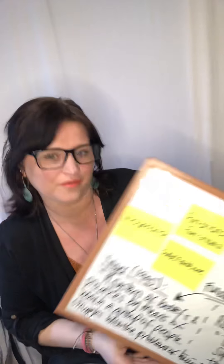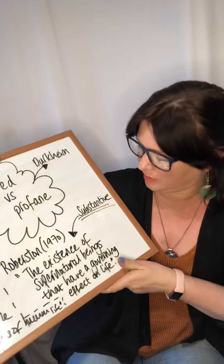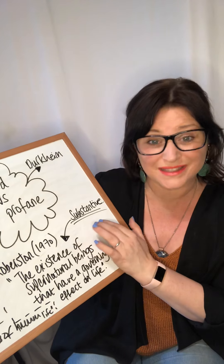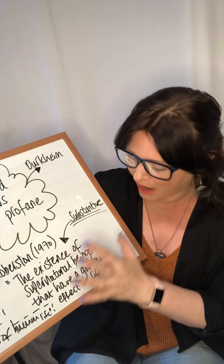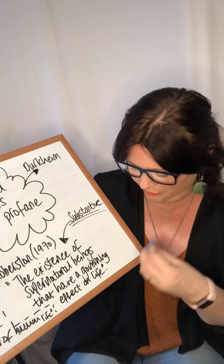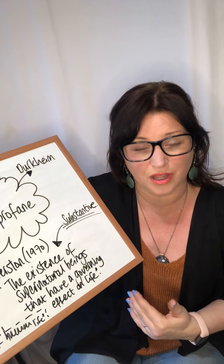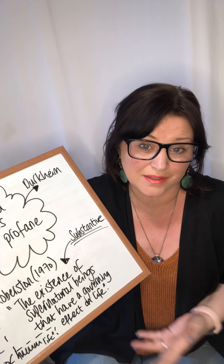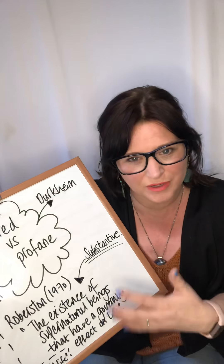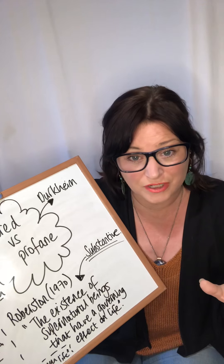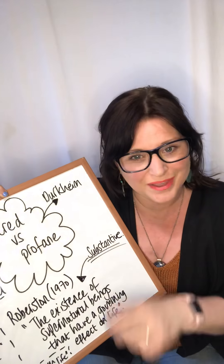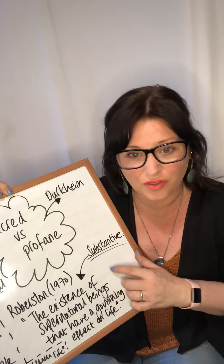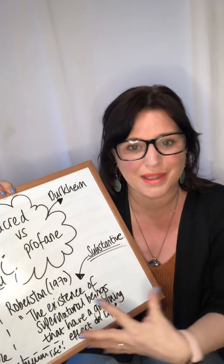If we look at Robertson — from 1970, so this is older but still very useful — Robertson gives more of a substantive explanation. Robertson said religion is the existence of supernatural beings that have a governing effect on life. This could be quite limiting, as Buddhism doesn't have a supernatural being, so it would exclude some religions. But it gives you an idea that substantive explanations identify key aspects of religion, and if we combine the two we start to get a better understanding of what religion is.